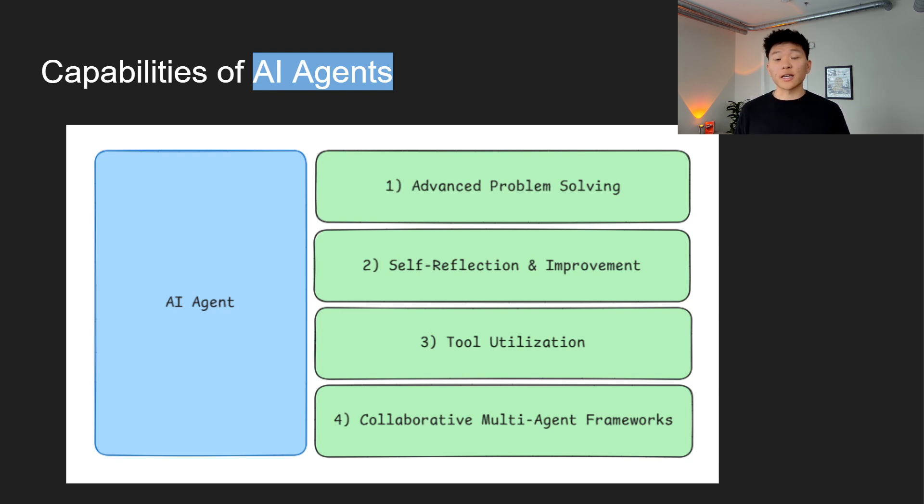Next, we have self-reflection and improvement. This is one of the most impressive capabilities of AI agents. They can analyze their own output, identify problems, propose solutions, and even communicate with other agents, which is super cool. This ability to improve through iteration sets them apart from static automation systems.